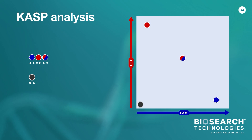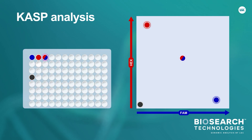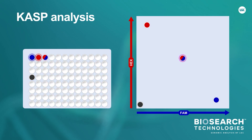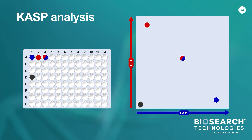CASP reactions are performed in plate format, and typically 96-well or 384-well reaction plates are used. In LGC Biosearch Technologies' laboratory, our high-throughput instrumentation also allows us to run CASP in 1536-well plates.